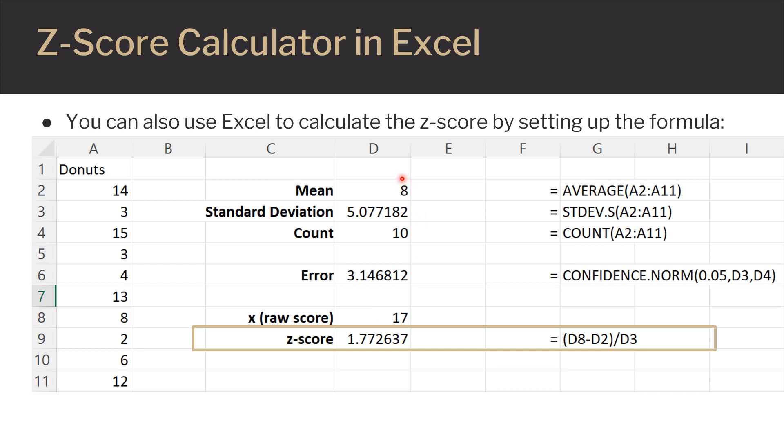Close the parentheses, and then divide by the standard deviation value. And you can just click on the cells as you are typing the formula. When you hit enter, it will automatically calculate your Z-Score for you.